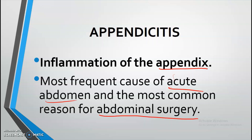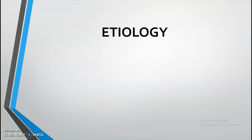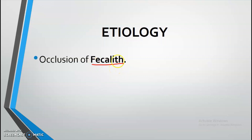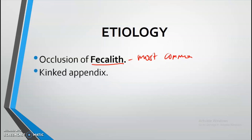What causes appendicitis? According to our book, there are several causes that can lead to appendicitis. The number one, and most common, is the occlusion of a fecalith — a hard fecal matter that gets lodged in the appendix. According to our book, this is the most common etiology. Aside from this, appendicitis can also be due to a kinked appendix.